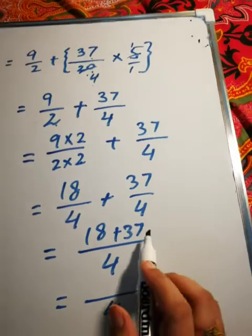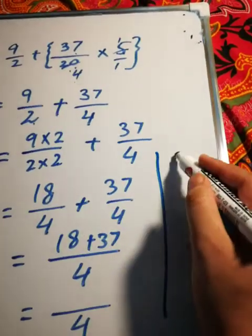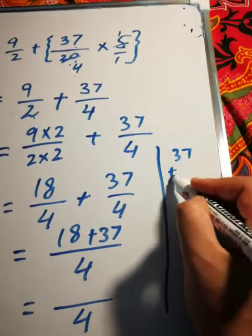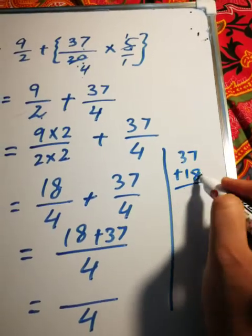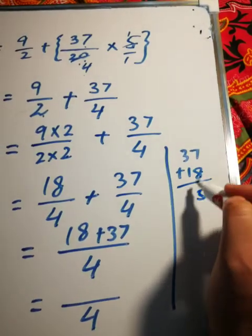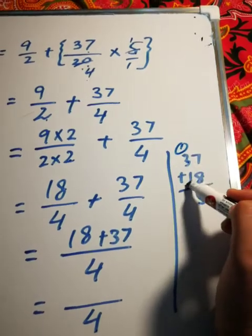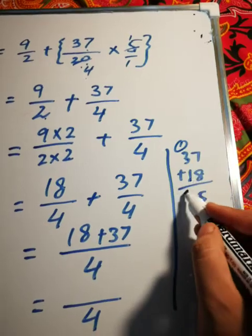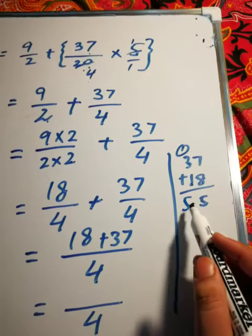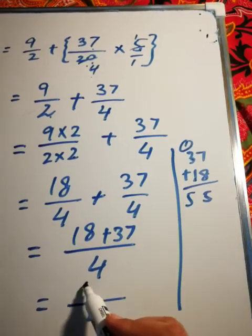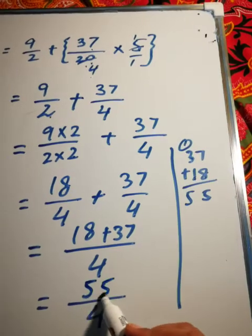37 plus 18. 7 plus 8 is 15, 1 carry. 1 plus 3 is 4, 4 plus 1 is 5. So it is equal to 55/4.